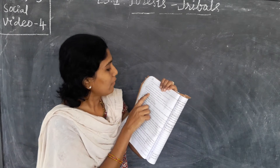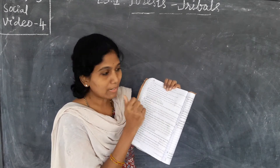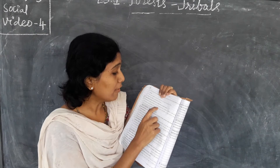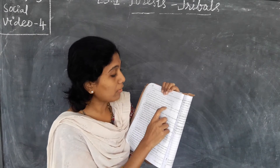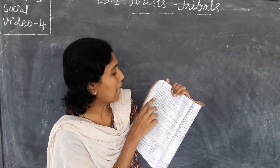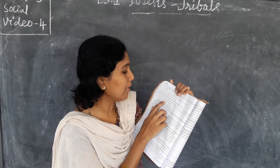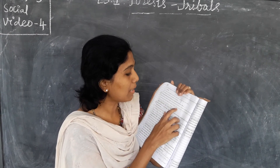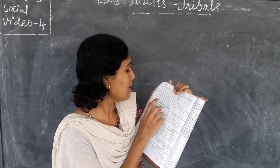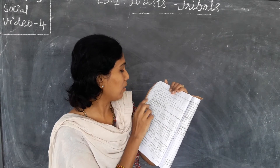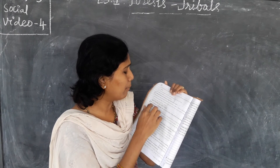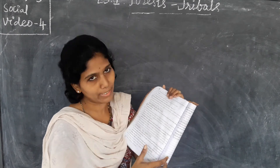Biodiversity is more in forests. In a forest, there are trees, creepers, climbers, undergrowth and bushes which provide shelter to various animals and plants. No such variety exists in a single tree, so there is more biodiversity in the forest.